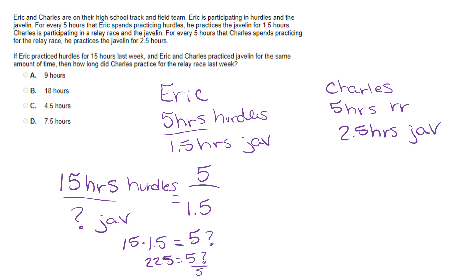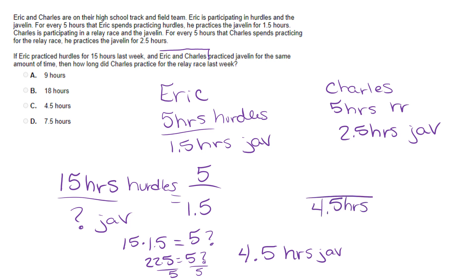We're going to divide both sides by five. Five goes into 20 four times with two left over. Five goes into 25 five times. So Eric spent four and a half hours on the javelin. Since Eric and Charles practiced javelin for the same amount of time, Charles also spent four and a half hours on the javelin.